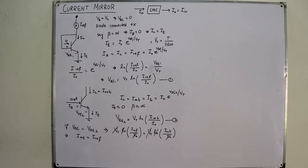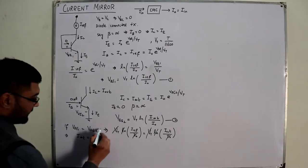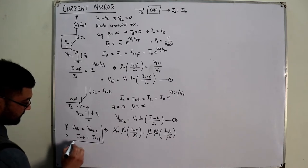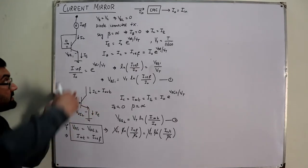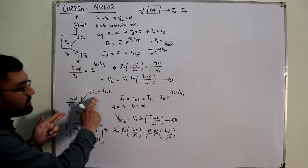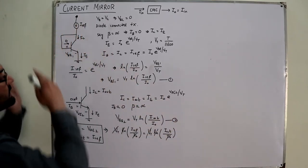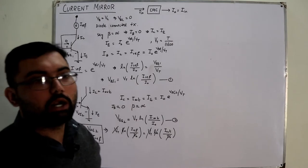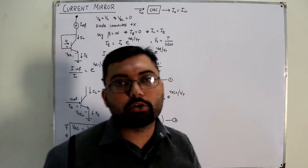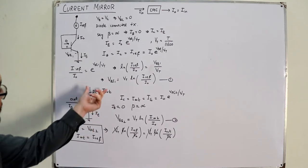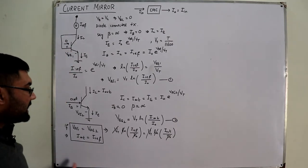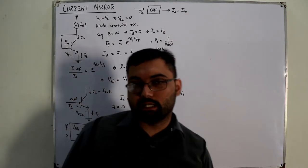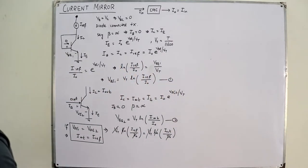This is what I wanted to show you — the output current equals the reference current. This means the current in one part of the circuit is equal to the current in another part of the circuit. The key condition to achieve this is making VBE1 equal to VBE2. I am now making the physical arrangement to ensure both base-emitter voltages are the same.